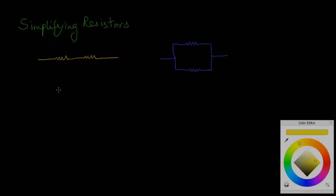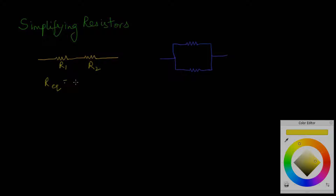Simplifying resistors can sometimes get very complex very fast. So let's start with the basics on how to simplify a resistor circuit. This particular formation is known as series. So if I have resistance R1 and R2, the effective resistance of this combination would be R1 plus R2. This result can be proved from Ohm's law.